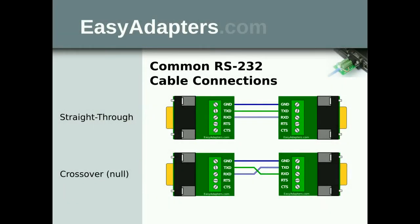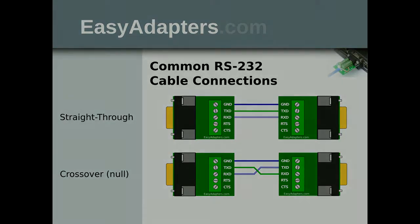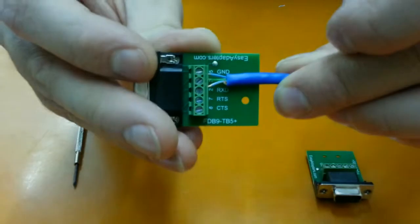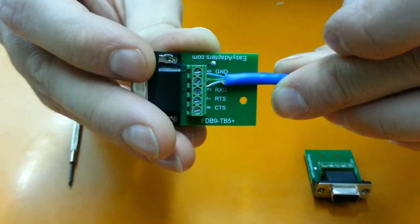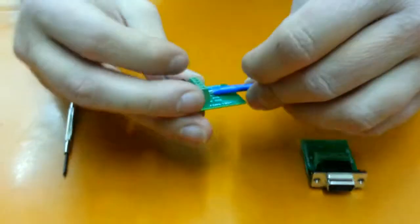For the straight through cable you're going to use the blue as the ground, the green as the transmit, and the blue and white as the receive. Make sure you always check your documentation to see what sort of cables you need to build.